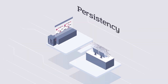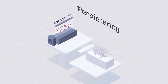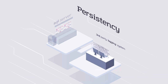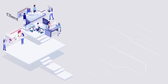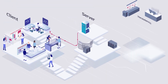The persistency layer consists of the SQL server, as well as an optional external logging system. The SQL server holds all the information of the Process Robot installation, such as the users, processes, and roles. Process Robot can be configured to publish logs in a third-party logging system, like Elasticsearch.